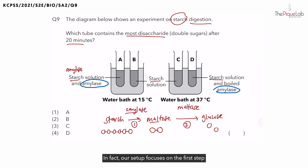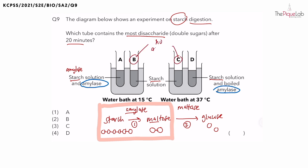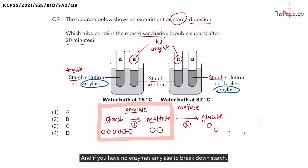Do you see any maltase in the setup? No. In fact our setup focuses on the first step of starch digestion where starch is digested by amylase to form maltose. Were there any setups that did not have any enzyme amylase? You can see that tubes B and C has no amylase. And if there are no enzymes amylase to break down starch, do you expect a lot of maltose to form after 20 minutes? No. So we can eliminate tubes B and C since there are no enzymes to break down starch.